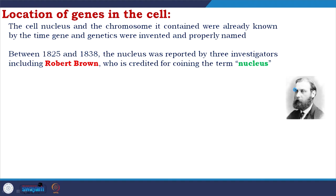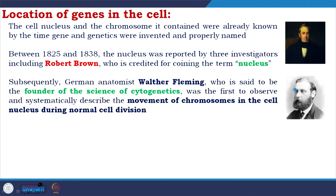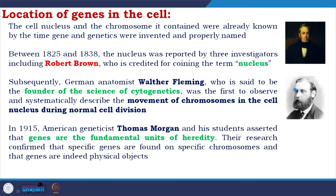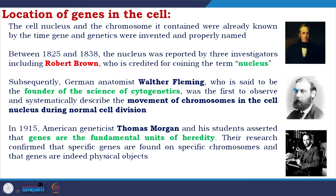Between 1825 and 1838, the nucleus was reported by three investigators including Robert Brown, who is credited for coining the term 'nucleus.' Subsequently, German anatomist Walter Fleming, said to be the founder of the science of cytogenetics, was the first to observe and systematically describe the movement of chromosomes in the cell nucleus during normal cell division. In 1915, American geneticist Thomas Morgan and his students asserted that genes are the fundamental units of heredity, confirming that specific genes are found on specific chromosomes and that genes are indeed physical objects.